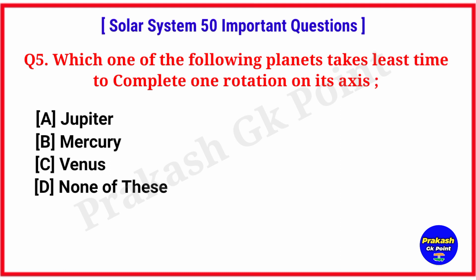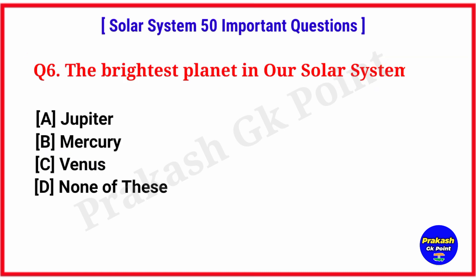Which one of the following planets takes the least time to complete one rotation on its axis? Answer: option B, Mercury. The brightest planet in our solar system is? Answer: option C, Venus.